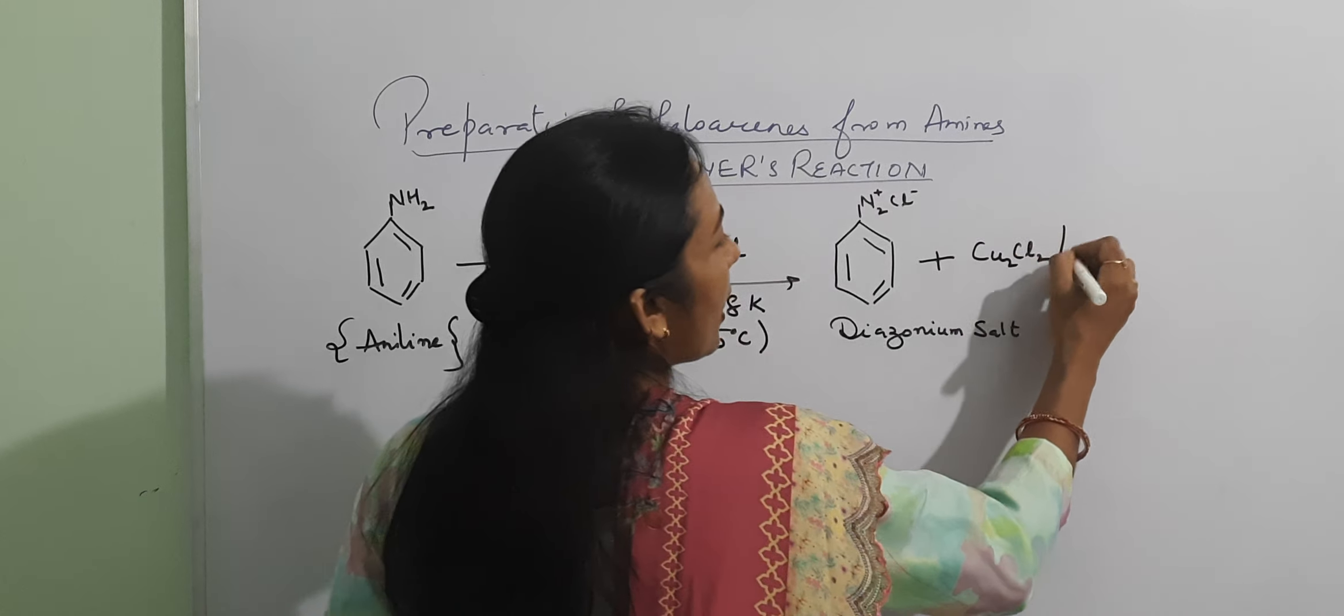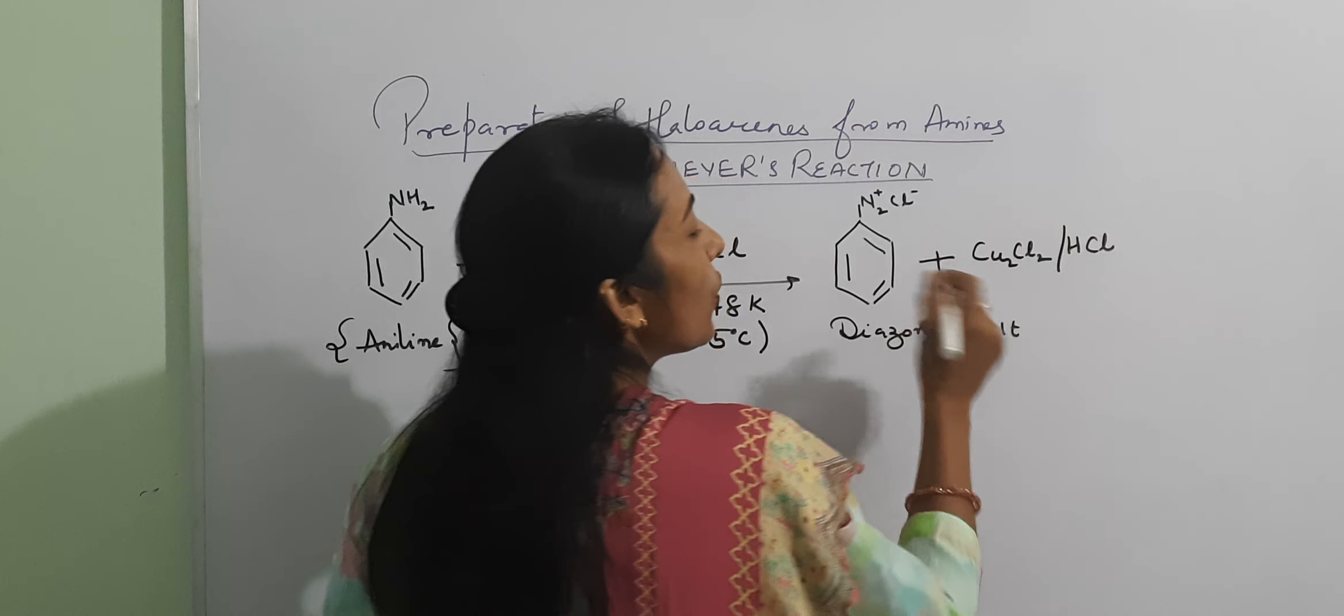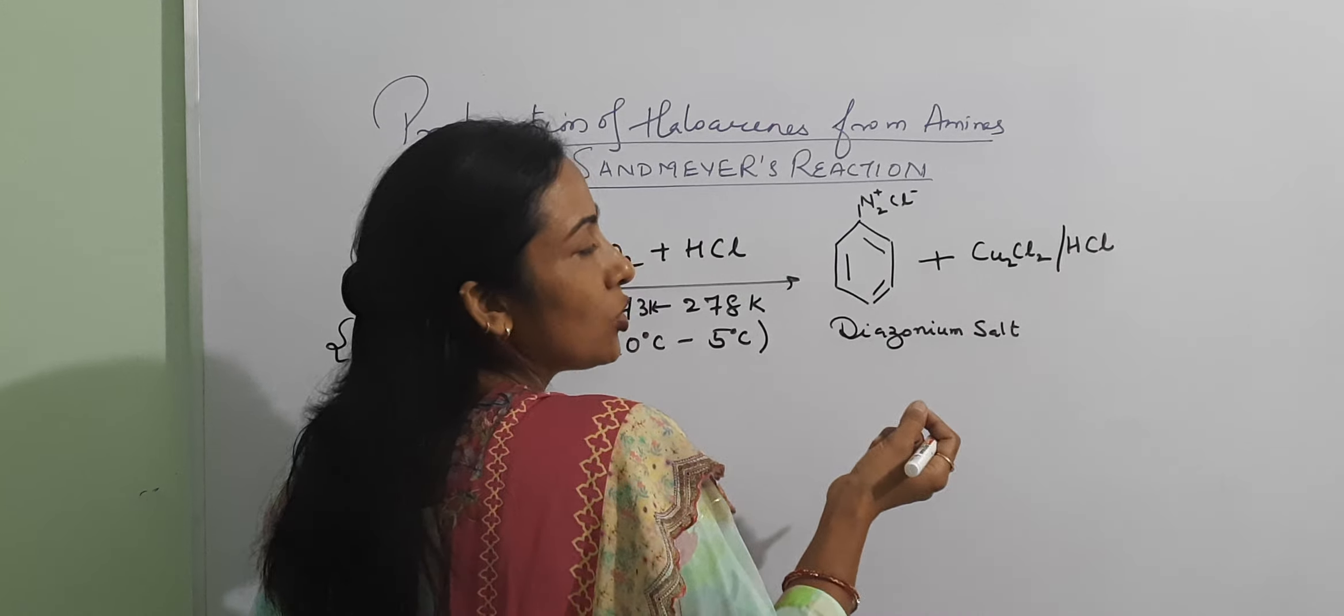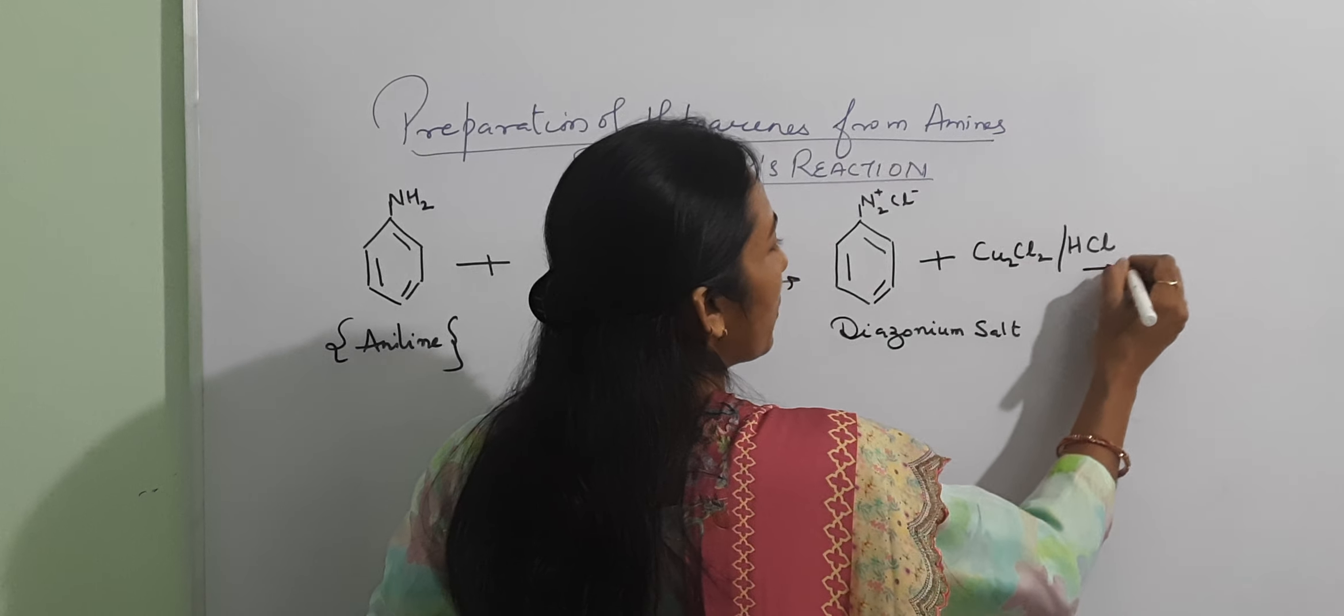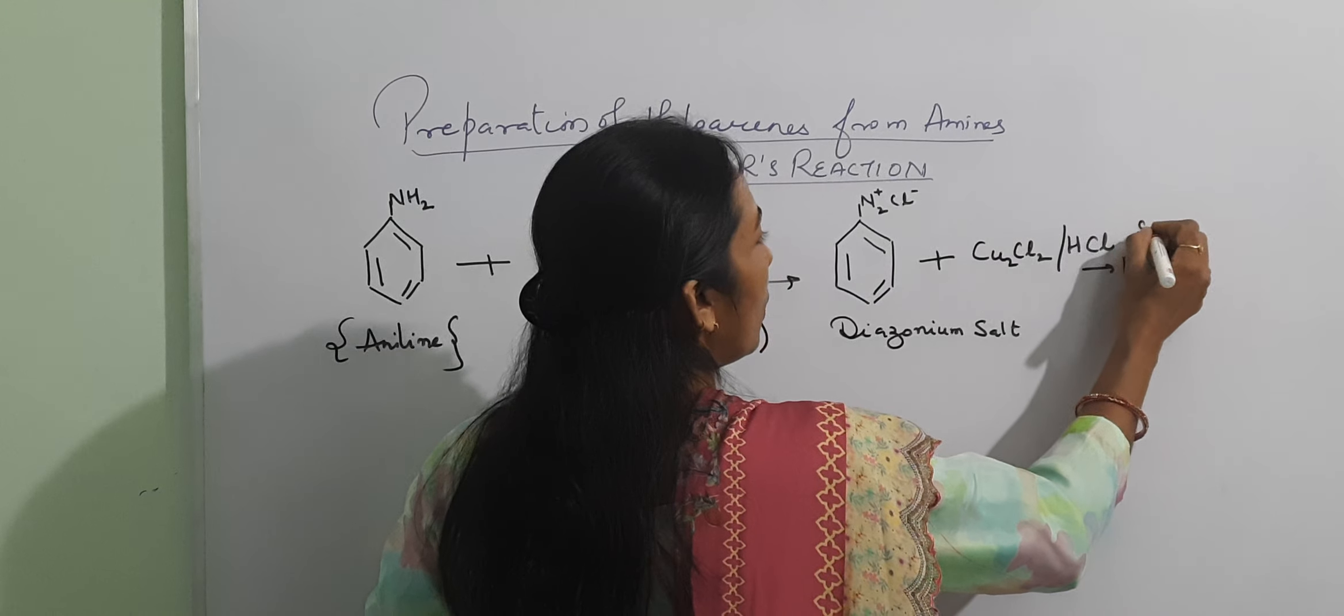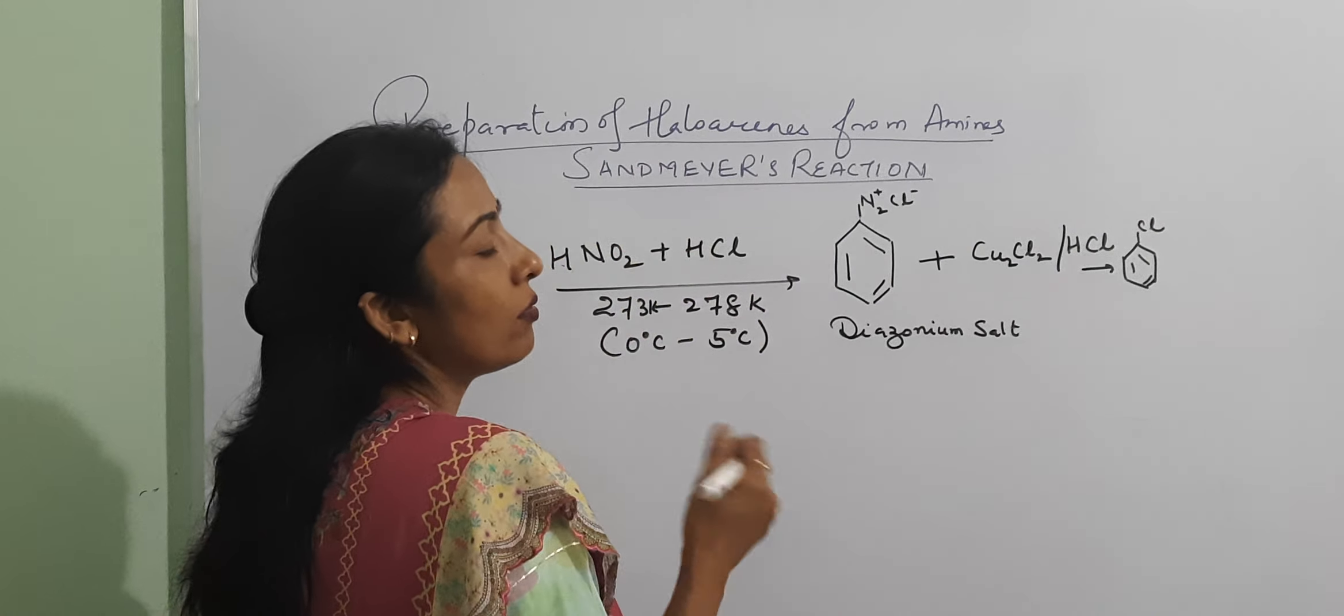And we will also take the mineral acid. So what is the product that we have? That is the chloroarenes.